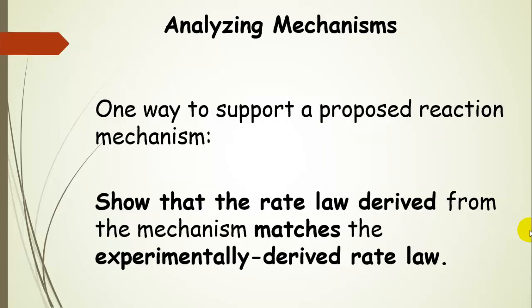One way to support a proposed reaction mechanism is to show that the rate law that can be derived from the mechanism matches the experimentally derived rate law. That's why we want to learn how to derive a rate law from a mechanism. We want to compare it to the experimentally derived rate law and see if it matches.